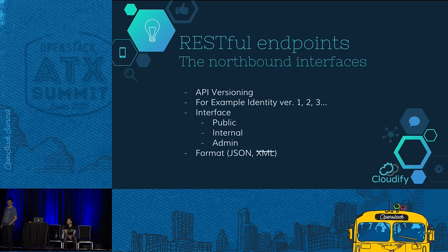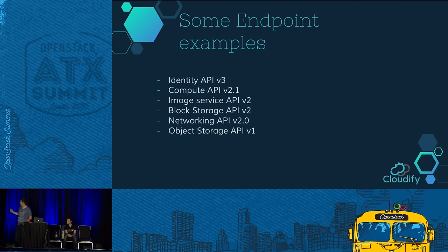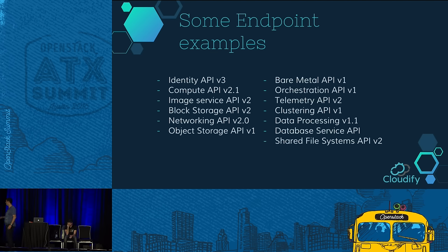The last point about format: currently the most common and only supported format going forward is JSON inside the HTTP calls. There used to also be an XML format, but it's now deprecated and in the newest releases not even available. Looking at some example endpoints, for each endpoint you'll see an API endpoint representation. The current versions listed here include core services like Identity Keystone, Compute Nova, Image Service Glance, and so on — that's a partial list.